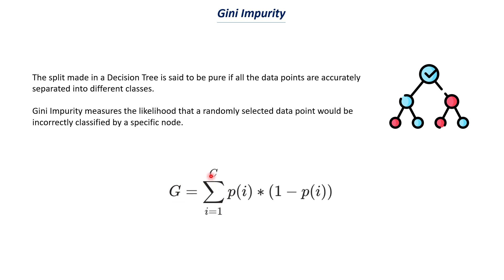The formula for Gini impurity is: G = summation from i = 1 to C of P_i × (1 − P_i), where C is the number of classes and P_i is the probability of class i. For example, if 7 out of 15 people are placed, P_placed = 7/15. Gini impurity is the likelihood of your model predicting a class wrongly. In scikit-learn's decision tree, there is a criterion parameter where you specify whether to build the decision tree based on entropy or Gini impurity — you can choose either information gain or Gini impurity.